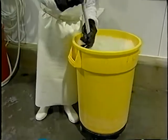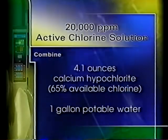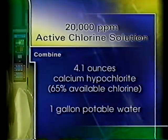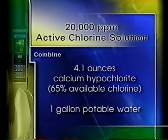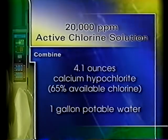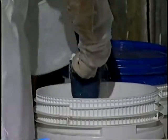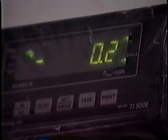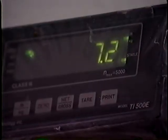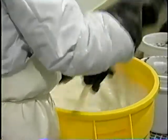A fresh solution of calcium hypochlorite should be used for each batch of seeds. Prepare a 20,000 ppm active chlorine solution by mixing 4.1 ounces of calcium hypochlorite powder, which contains 65% available chlorine, with one gallon of potable water at room temperature in a well-ventilated area. It's important to weigh the calcium hypochlorite on a scale rather than using a measuring cup. Only by using scales can the proper concentration of 20,000 ppm of active chlorine be assured. The solution should be stirred for at least five minutes to maximize free chlorine in the solution.